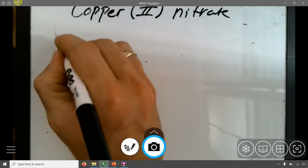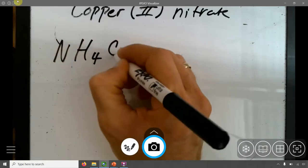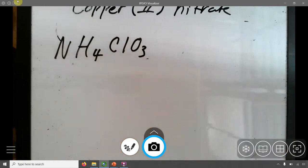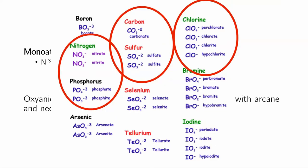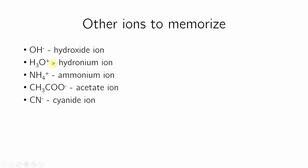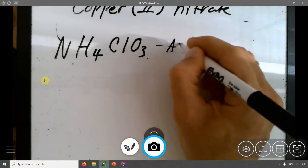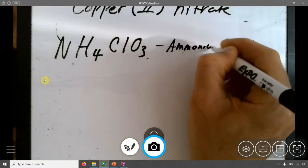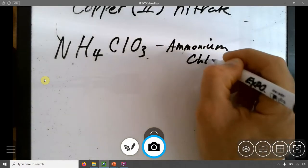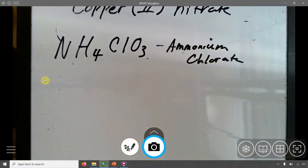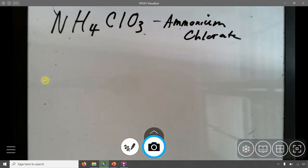Let's look at this one. NH4ClO3. That's totally from the memorization table. So ClO3 is right here. That's chlorate. And I told you to memorize the other one. It's ammonium. So this is ammonium chlorate. So some of it is memorization, some of it is some logic, some of it is a little bit of both.